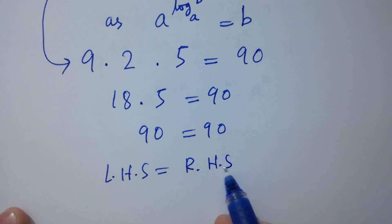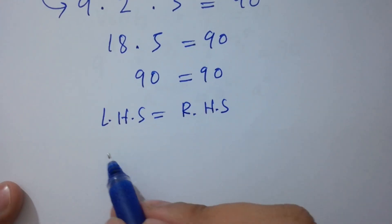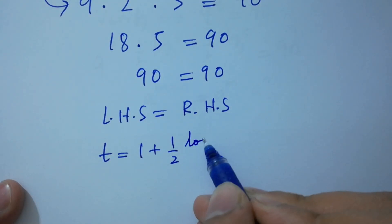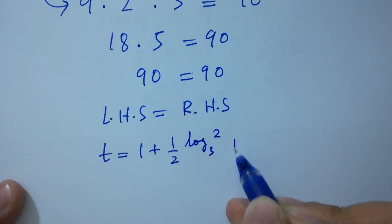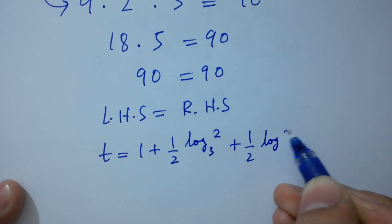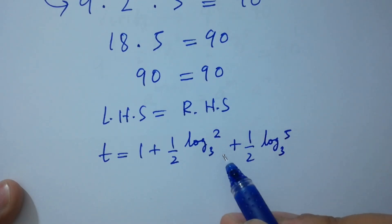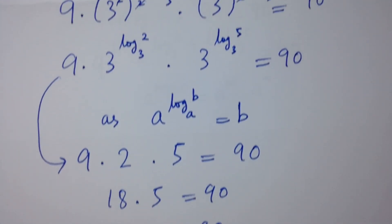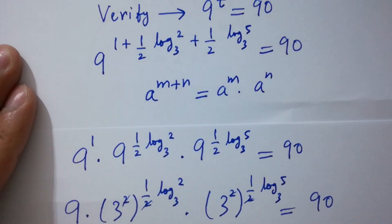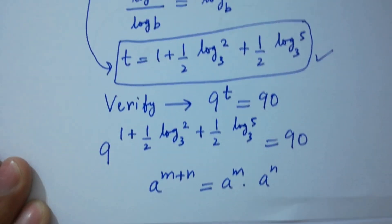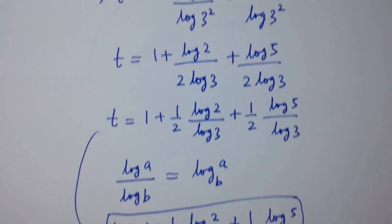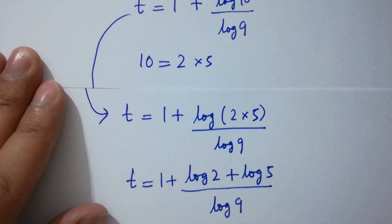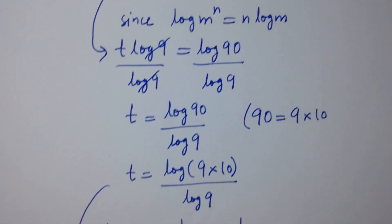18 times 5 equals 90, so 90 equals 90. Left hand side equals right hand side, which shows that the value of t equals 1 plus half log 2 to the base 3 plus half log 5 to the base 3 satisfies the equation. Thanks for watching this video. Please subscribe to this channel to get notifications of new videos, and don't forget to share these videos with your classmates and friends. You can also visit the playlist of this channel to learn more.